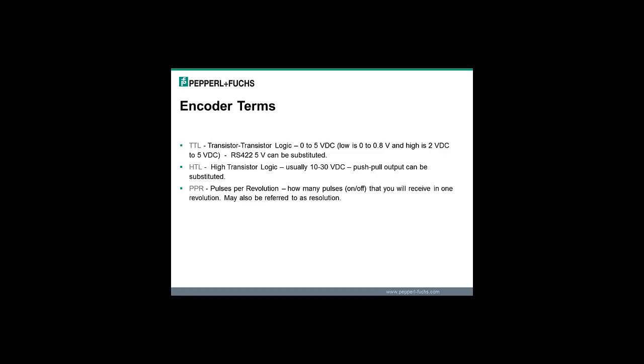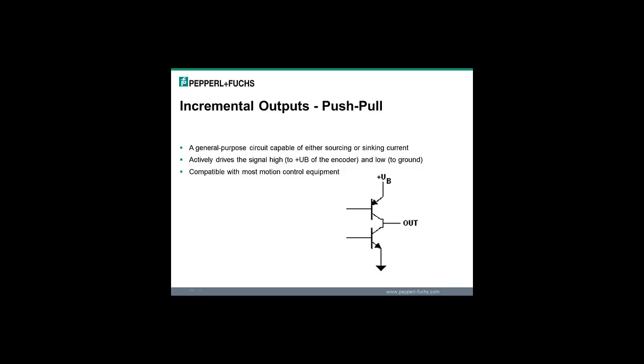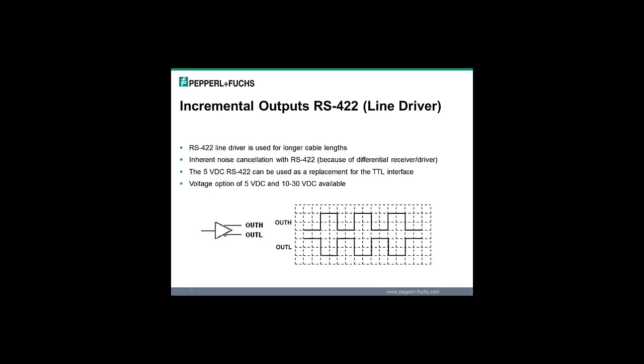Pulses per revolution or PPR is how many pulses are on the incremental code disk. If you know the PPR of an incremental encoder, it can help you determine the resolution. The push-pull output can be wired for sourcing or sinking output, compatible with most PLC and counter 24 volt DC inputs. The RS422 line driver output is used for longer cable runs and has inherent noise cancellation because of differential driver and receiver.